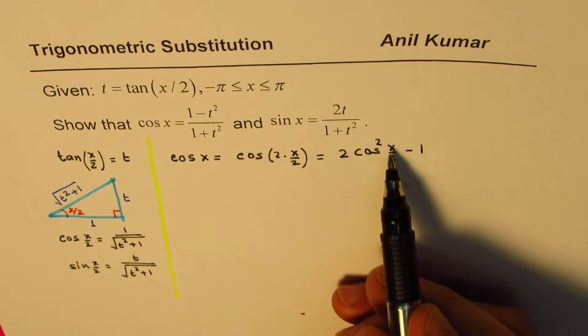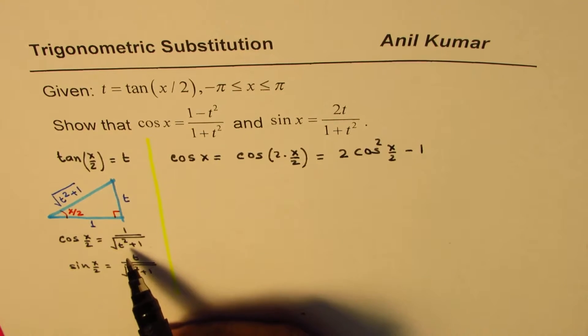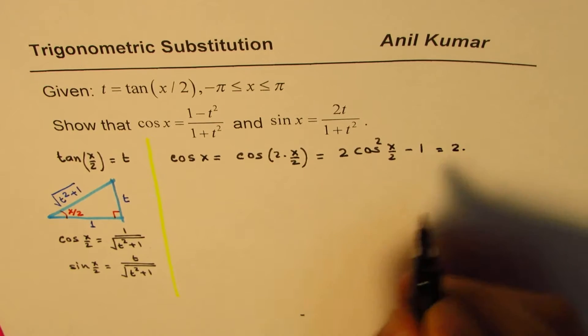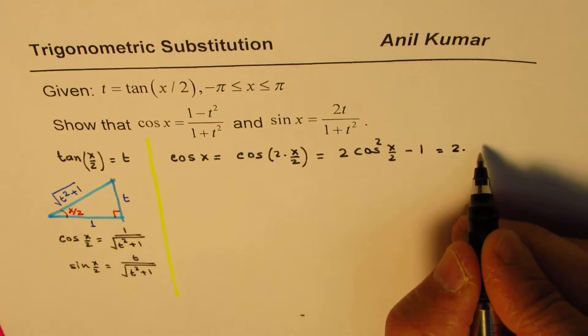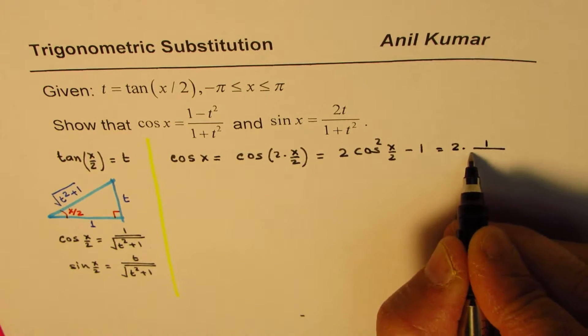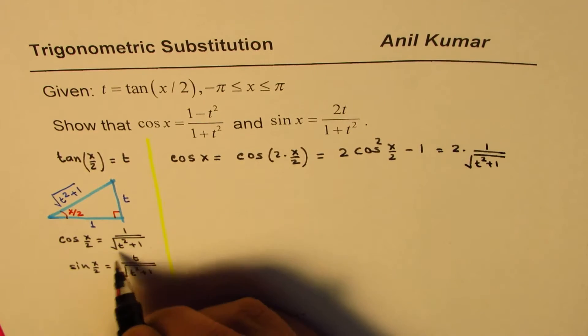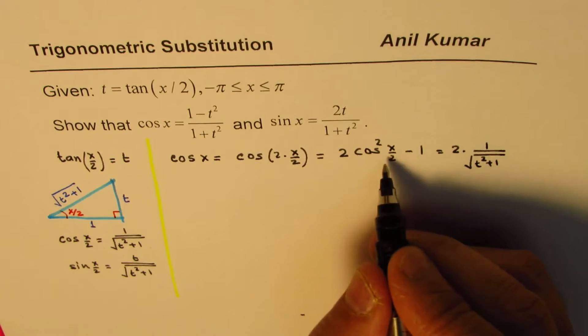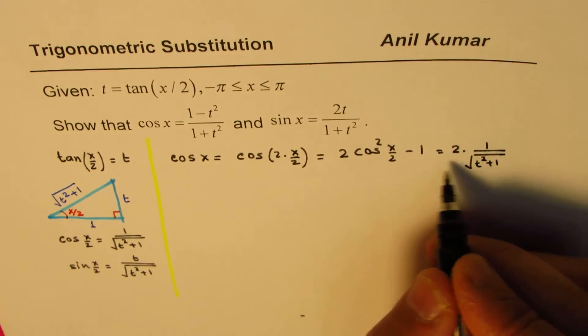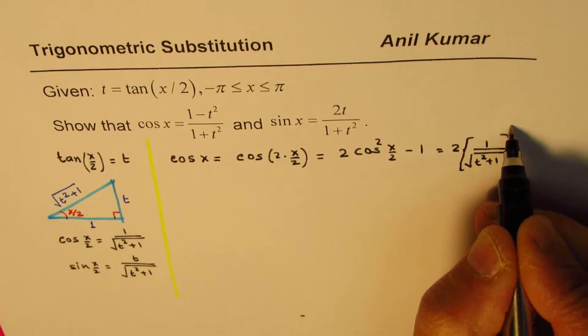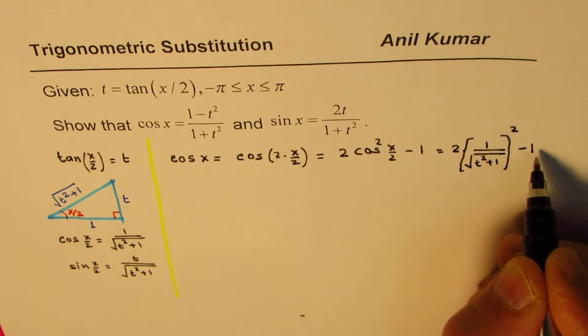We already know what is cos(x/2), which is right there. So we could use this one. So we can write this as 2 times cos(x/2) is 1 over square root of t² plus 1, that whole square. So cos 2 times this thing's whole square. So we'll just square this up, minus 1.